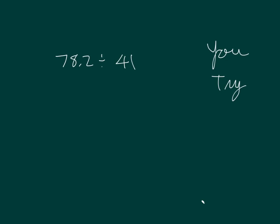Okay, it's your turn to try. 78 and 2 tenths divided by 41. Estimate your quotient. 80 divided by 40, which is the same as 8 divided by 4, which equals 2. Our estimated quotient is 2.